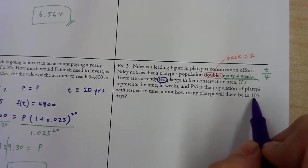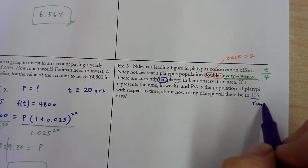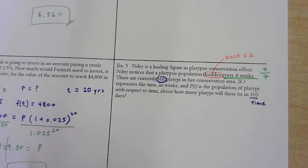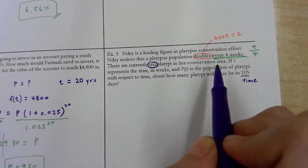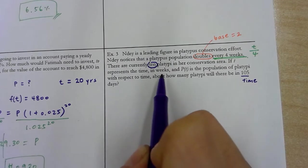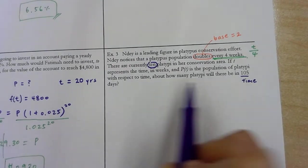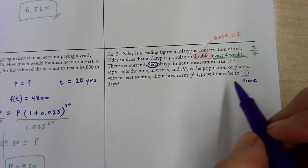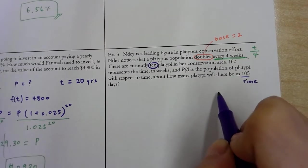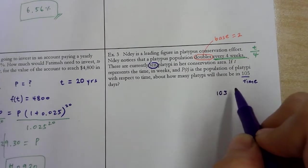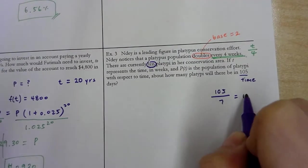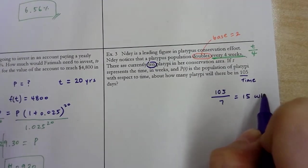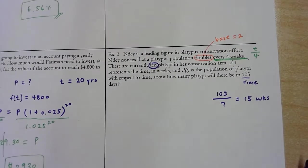So here, this would be actually the initial amount of platypus. And then this would be the time. So hold on. What is this time? Now, did anyone notice that the unit of time is actually different? We have every four weeks. If t represents time in weeks, but then I'm given time in days. So actually, what we're going to do is we're going to go ahead and convert this day into how many weeks? And put it in the calculator. 15 weeks.